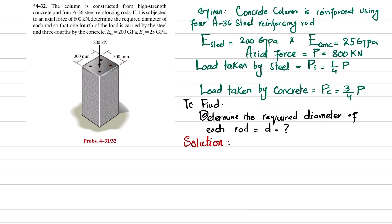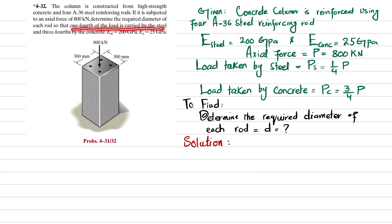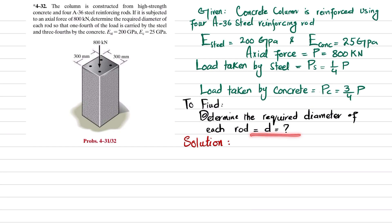You have to find the required diameter of each rod. Given data: concrete column with four A36 steel rods. E of steel is 200 GPa, E of concrete is 25 GPa, axial load is 800 kN. The load taken by steel (Ps) is one fourth of the total load P, and load taken by concrete (Pc) is three fourths of P. Let's start with the solution.